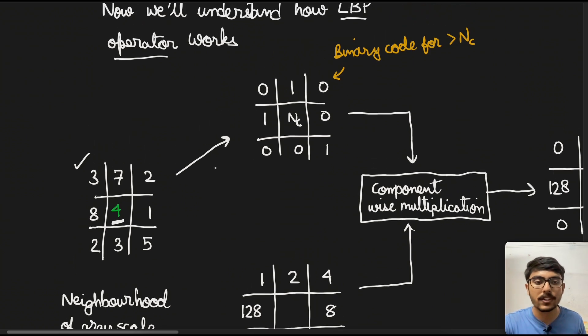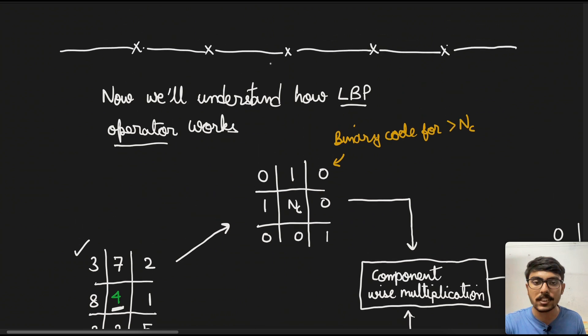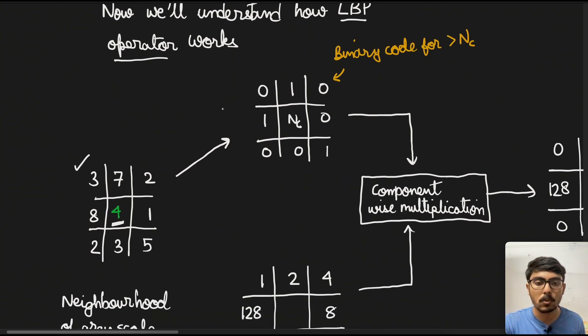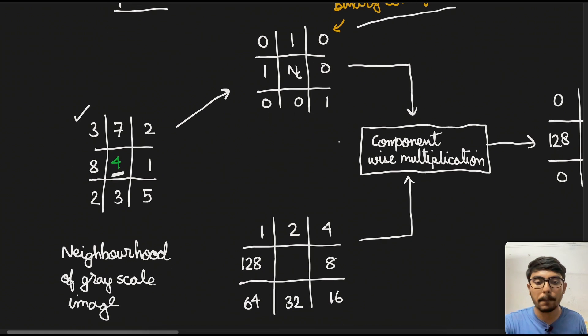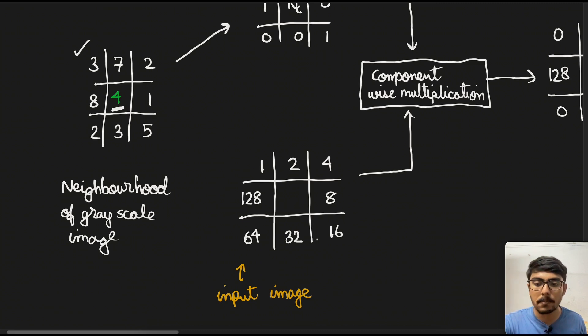So what we are going to do is first we create the binary code as we discussed above. Those values which are greater than or equal to will have one, and other values have zero. The center part is just denoting four, so it is not a number. Below, you see, we have an input image. This is the image that we will be putting our LBP operator on. We have all the values except the center value: 1, 2, 4, 1, 28, 64, 32, 16, and 8.